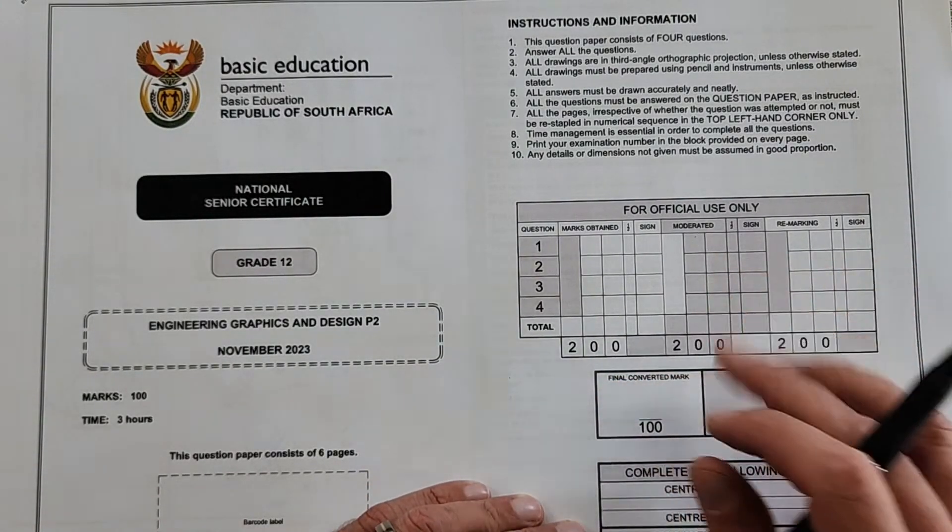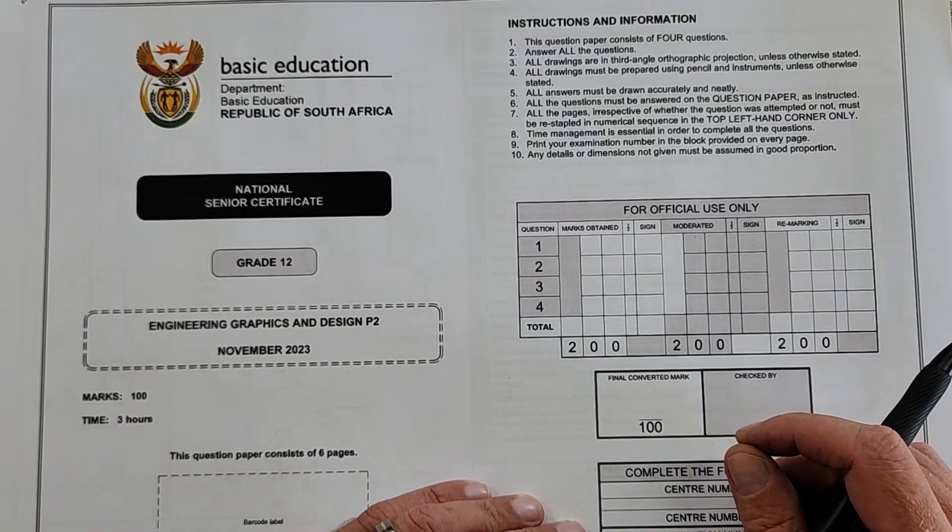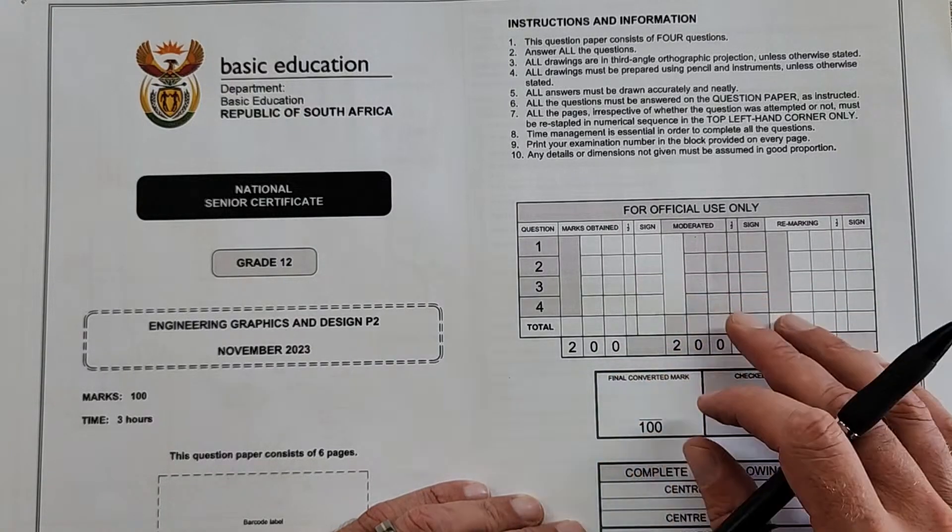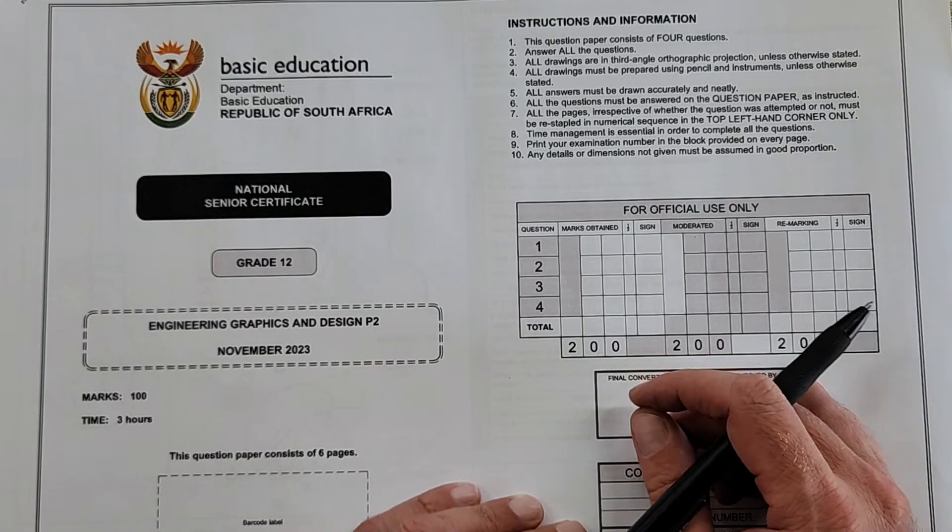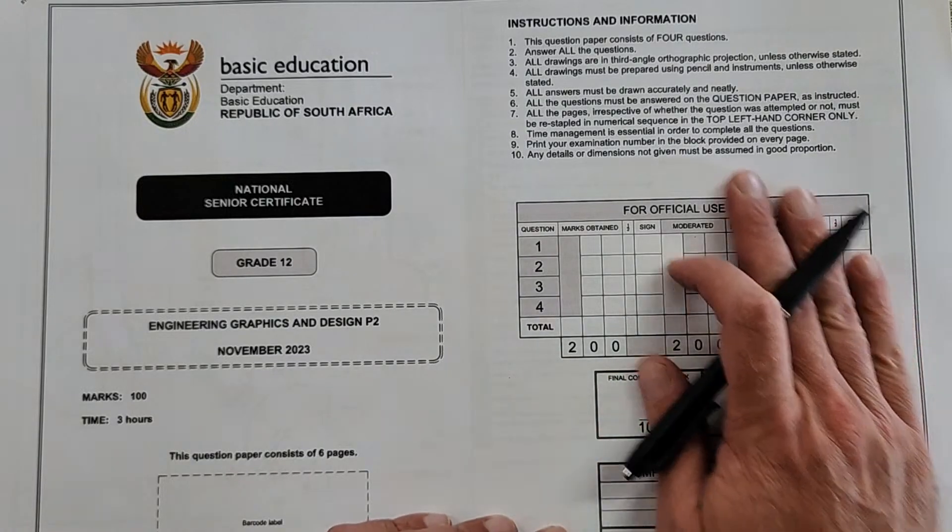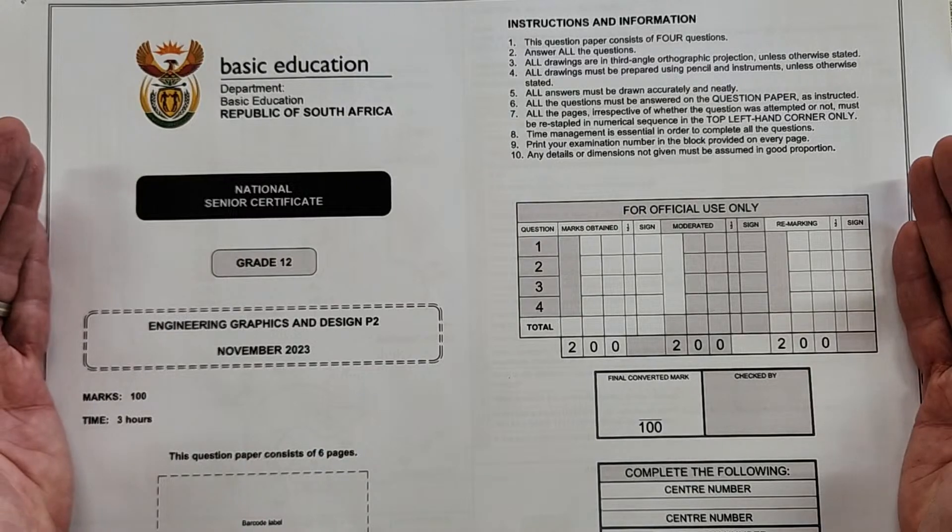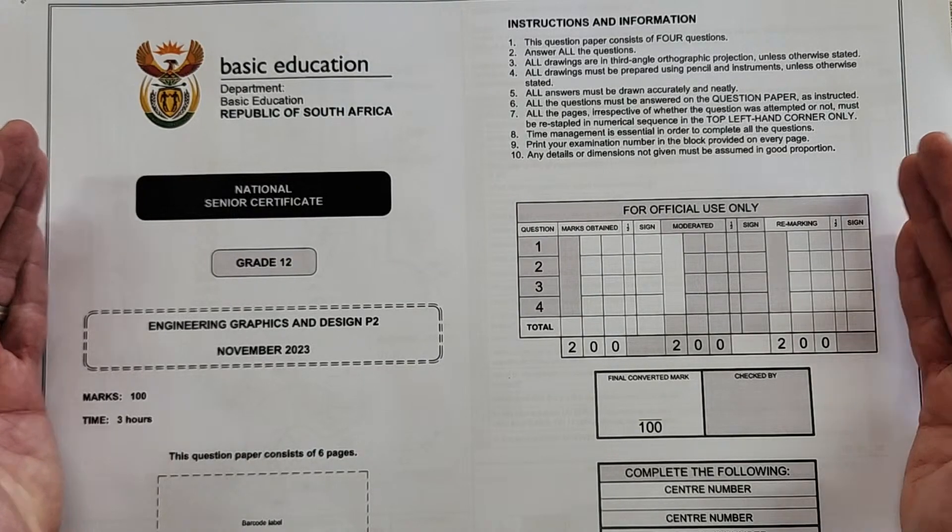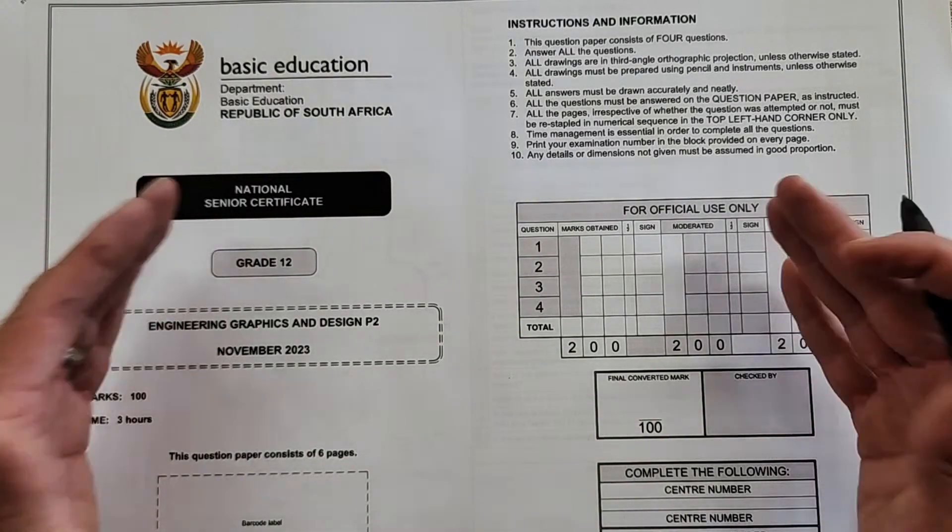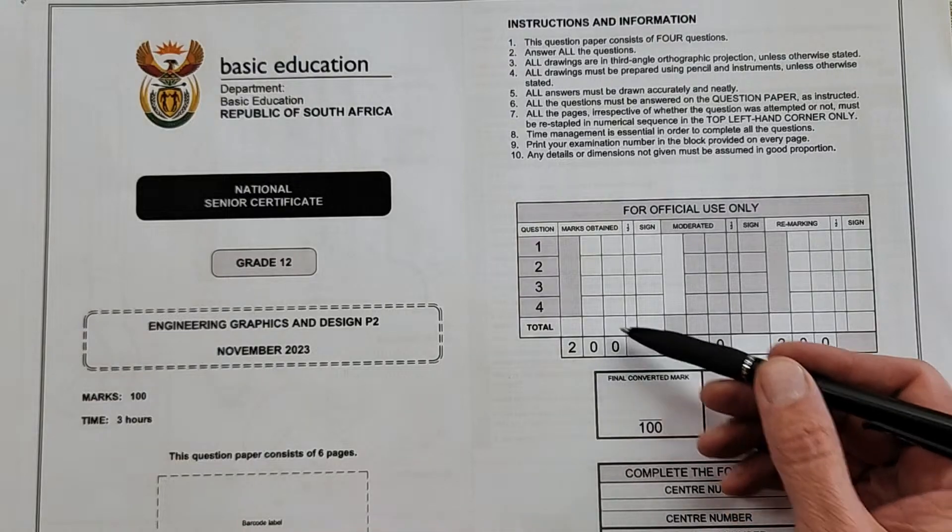This paper, of course, with its memo is available for free in the download section. Just check the description on this video or head on over to the About section where you can find the link to free HD papers and memos. So let's have a look at what you can expect for Paper 2.